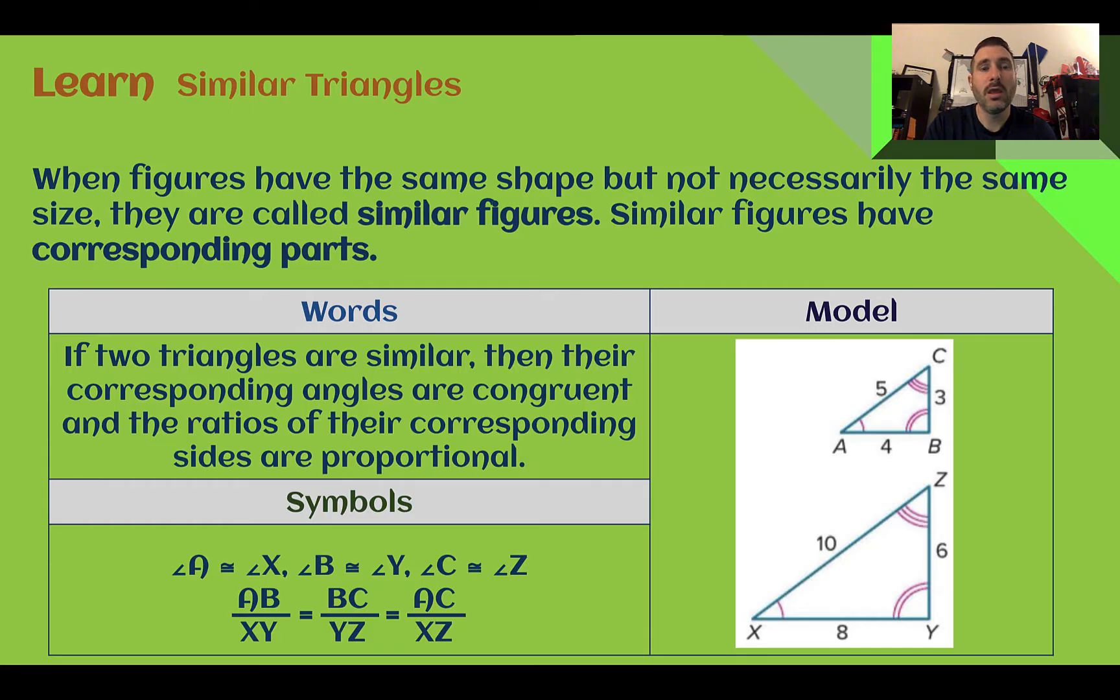Similar triangles. When figures have the same shape, but not necessarily the same size, they're called similar figures. Similar figures have corresponding parts, meaning they have parts that are related on each of them.